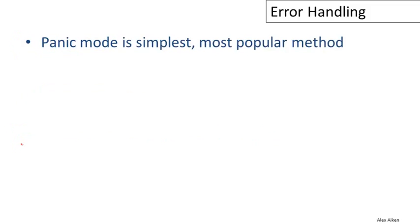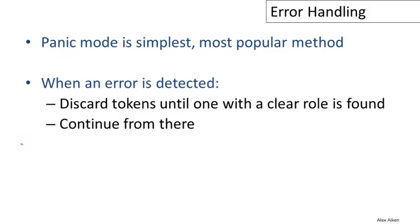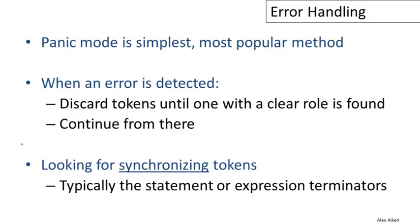Panic mode is the simplest and most popular method of error recovery that's widely used. When an error is detected, the parser begins discarding tokens until one that has a clear role in the language is found, and then it tries to restart itself and continue from that point. These tokens it's looking for are called synchronizing tokens — tokens with a well-known role in the language so we can reliably identify where we are. A typical strategy might be to skip to the end of a statement or function, then begin parsing the next statement or function.